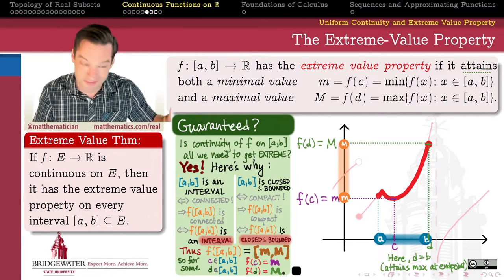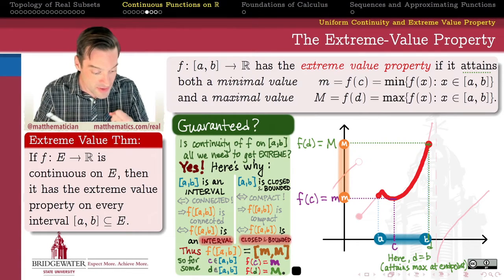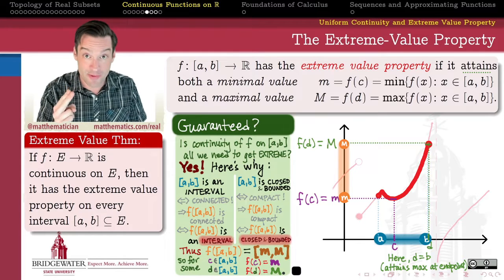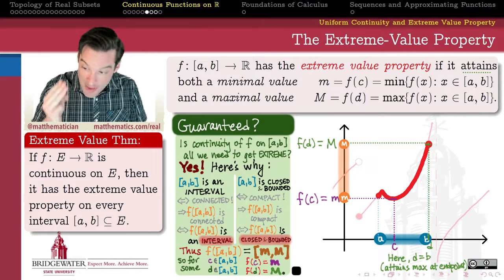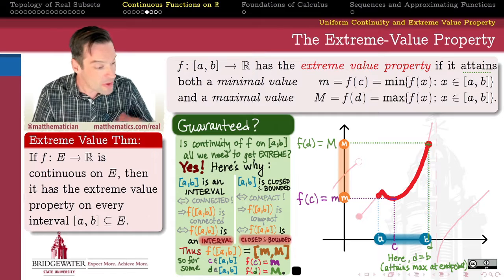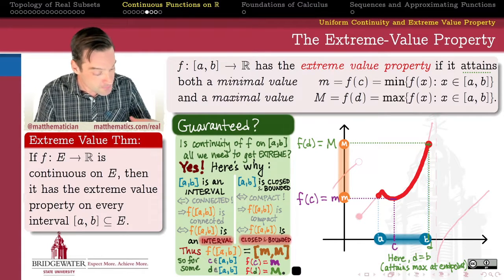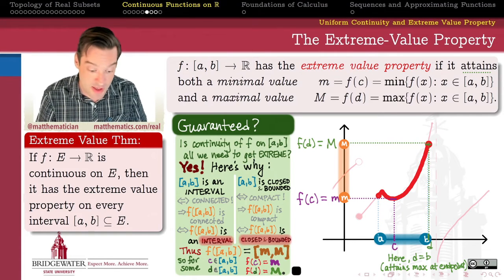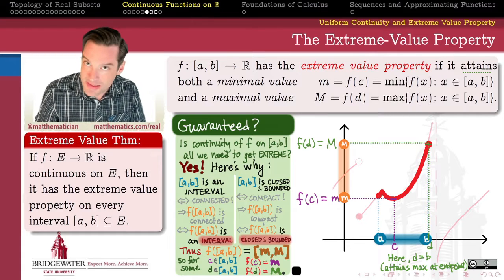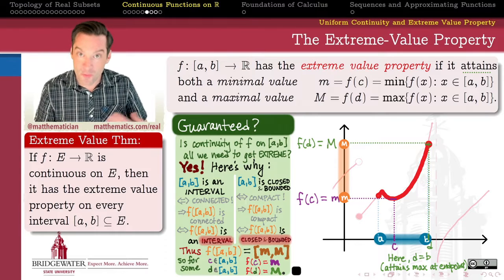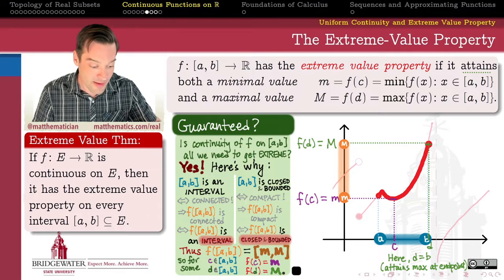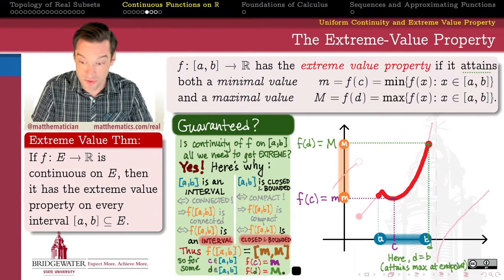Continuous functions attaining a maximum and minimum value on every compact domain is a big deal — it doesn't just make the calculus student happy because optimization homework problems are possible. It's also going to be a valuable tool as we get more into how continuous functions work, where they come from, and what special kinds of continuous functions we can study in analysis. We're going to refer back to this result an awful lot. Next, before moving into derivatives, we'll look at one more extremal property of continuous functions: uniform continuity — which in the beginning doesn't seem very interesting but is an example of the kind of thinking we'll increasingly do in analysis.